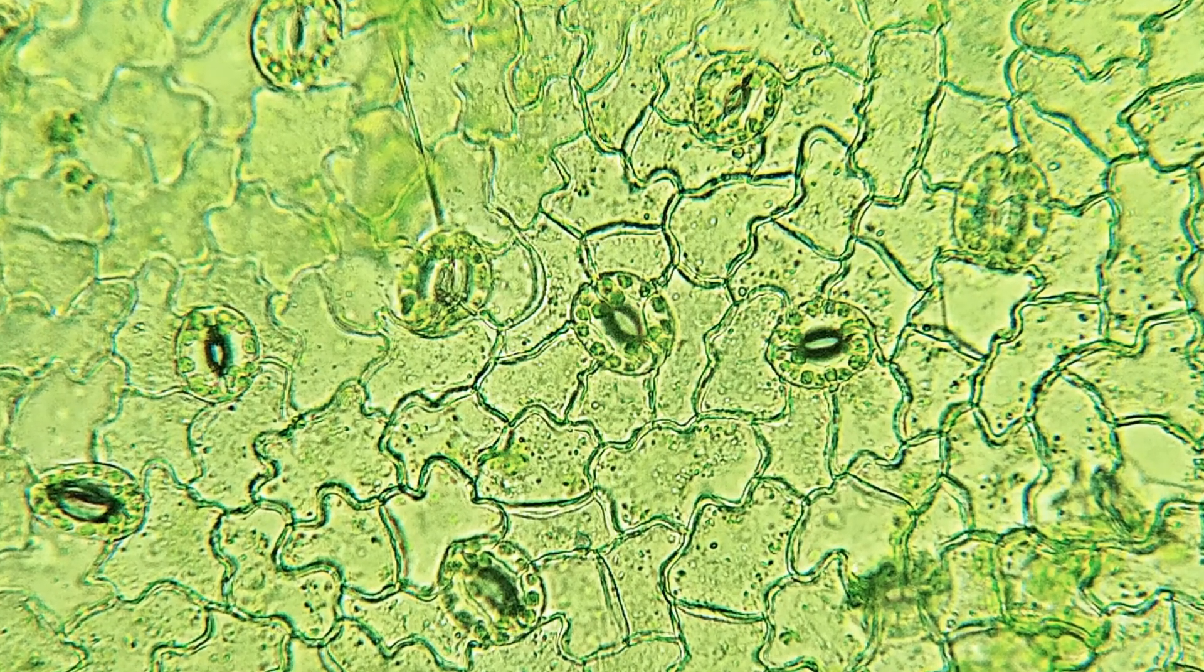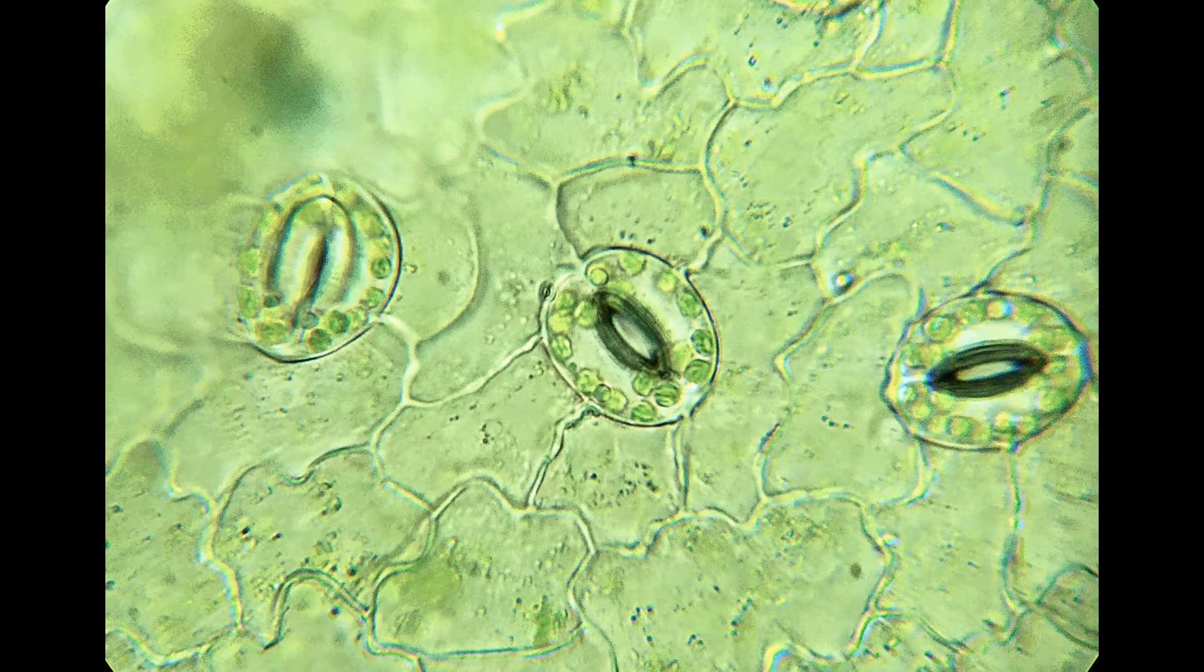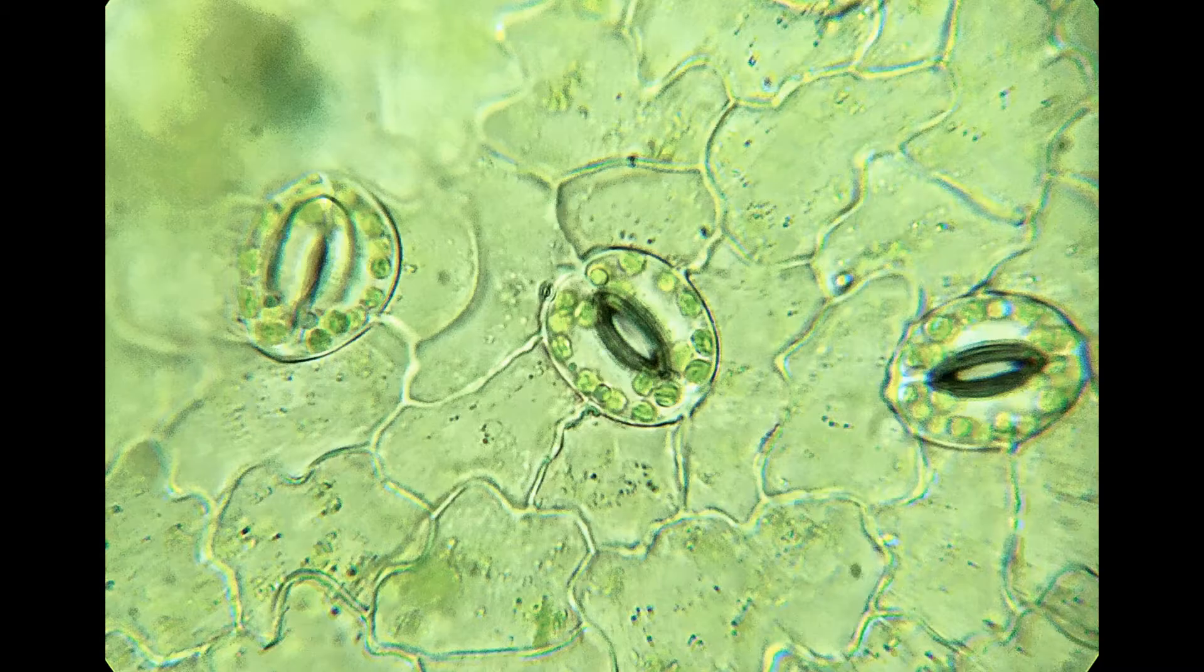Stomatal transpiration accounts for about 50 to 96% of transpiration. A stoma is surrounded by a pair of specialized parenchymatous bean-shaped epidermal cells called the guard cells.